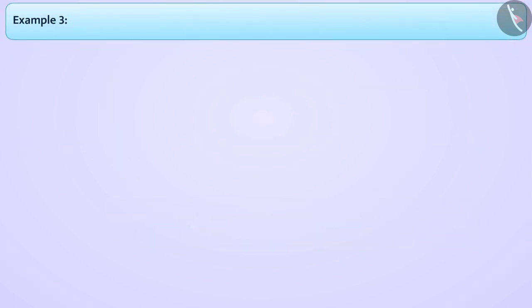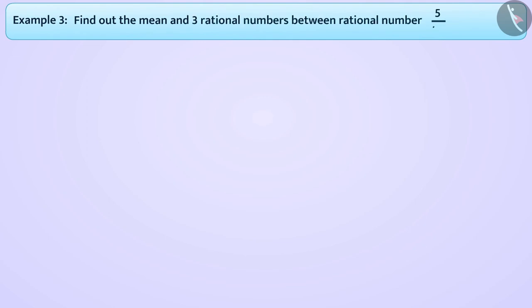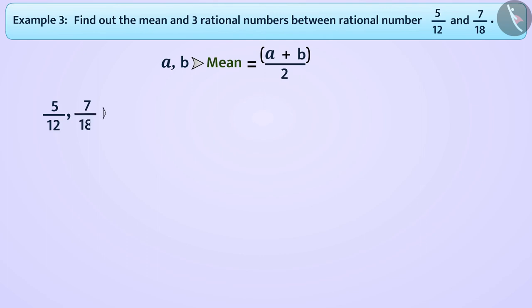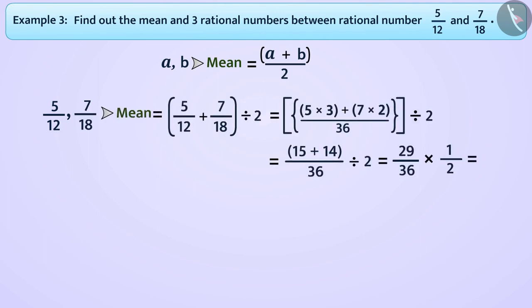Next example: find the mean and 3 rational numbers between the rational numbers 5 by 12 and 7 by 18. The mean of any 2 rational numbers A and B is A plus B divided by 2. In this way, the mean of 5 by 12 and 7 by 18 is 29 by 72.